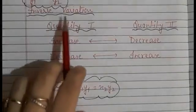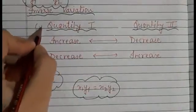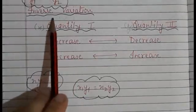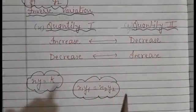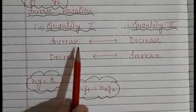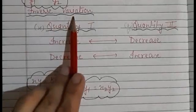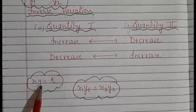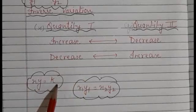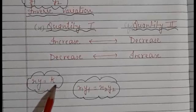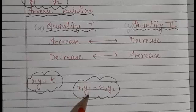Similarly, for inverse variation: quantity one is x and quantity two is y. When one quantity increases the other decreases, and if one quantity decreases the other increases. So in that case the product of the first quantity and the second quantity is always equal to a constant: x × y = k, where k is any constant. The formula for inverse variation is x₁ × y₁ = x₂ × y₂.